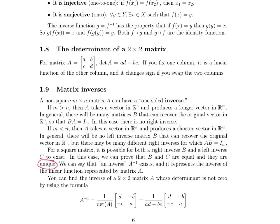This two by two matrix has very similar entries to A but slightly modified. The entries along the main diagonal are swapped — A had 'a' in the top-left and 'd' in the bottom-right, and now 'd' is here and 'a' is here. The entries along the off-diagonal don't change position, but they are multiplied by negative one. So rewritten, substituting our recipe for the determinant, it's one over (ad minus bc), then with the swapped entries.